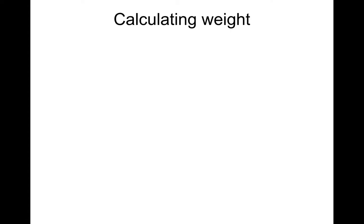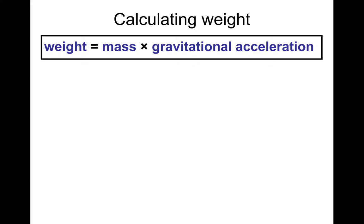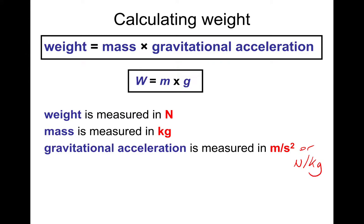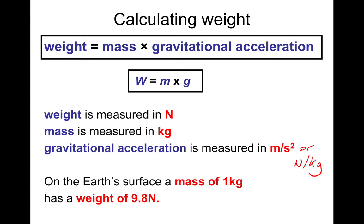How do we calculate weight? The equation is weight equals mass times gravitational acceleration, or as physicists write it: w = mg. Weight is measured in newtons because it's a force. Mass is measured in kilograms, and gravity is measured in meters per second squared or newtons per kilogram. On Earth's surface, a mass of 1 kilogram will have a weight of 9.8 newtons.